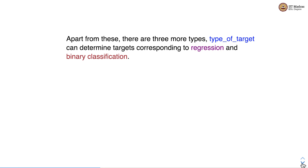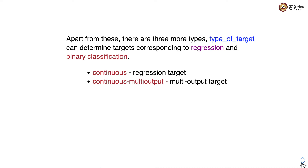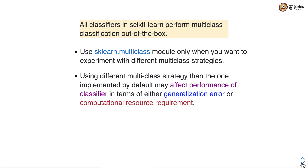Apart from multi-learning types, type_of_target can also determine whether the target corresponds to regression or binary classification. 'continuous' denotes a regression target, 'continuous-multioutput' is multi-output regression, and 'binary' is for binary classification. All classifiers in sklearn perform multi-class classification out of the box, so we use the sklearn.multiclass module only when we want to experiment with a different multi-class strategy than the one already implemented in sklearn estimators. Using a different strategy may affect generalization error or computational resource requirements.